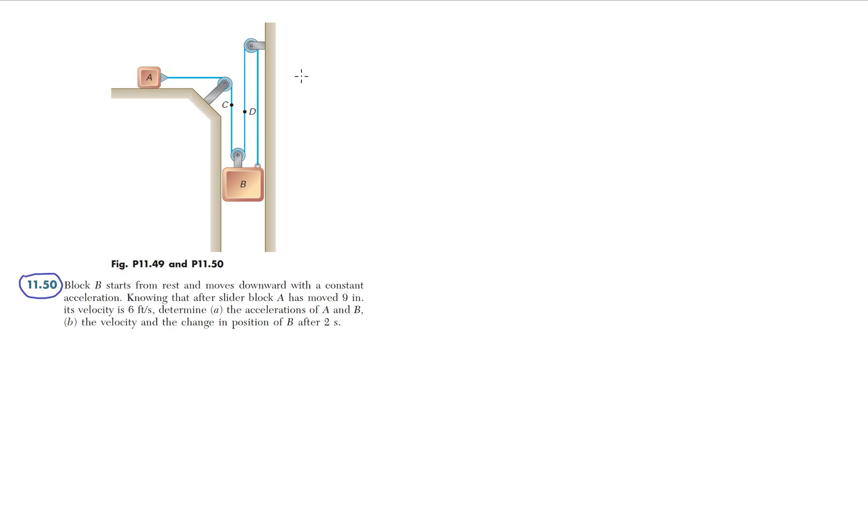Now that we have that in mind, let's do a length equation. So the length of the rope is going to be this section L_A, plus this section, this section, and this section, which we're just going to call one of them L_B. So it's going to be three L_B. One, two, three.